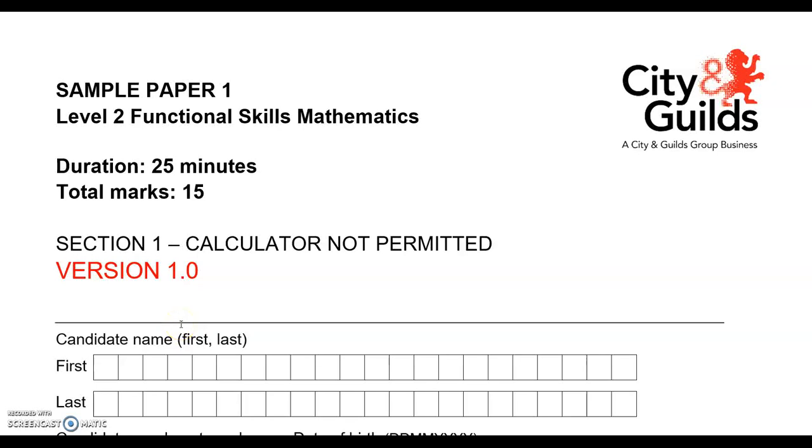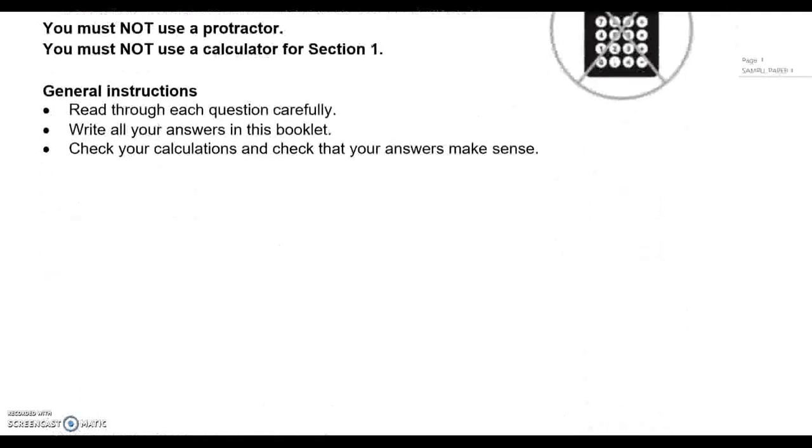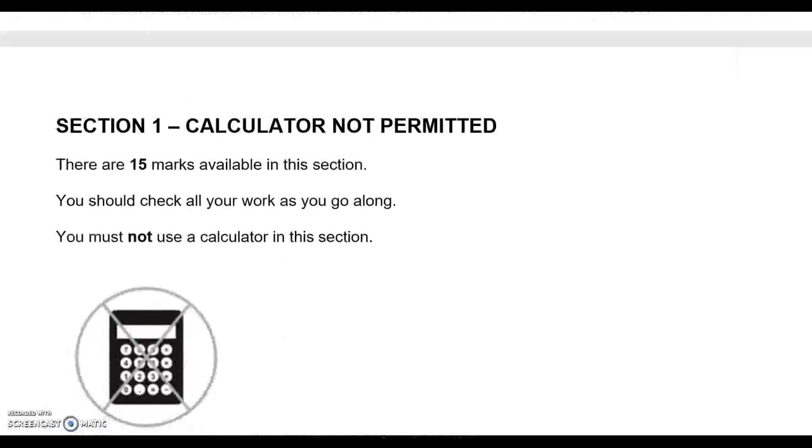This is a level two practice paper from City and Guilds, part A. You can't use a calculator for this part. It's worth 15 marks in total. So we'll look at each question one by one.